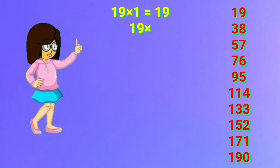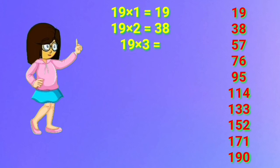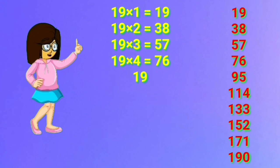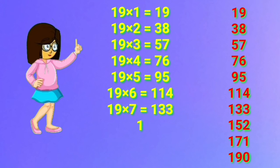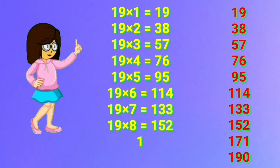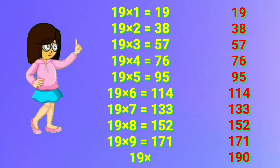19 one's are 19. 19 two's are 38. 19 three's are 57. 19 four's are 76. 19 five's are 95. 19 six's are 114. 19 seven's are 133. 19 eight's are 152. 19 nine's are 171. 19 ten's are 190.